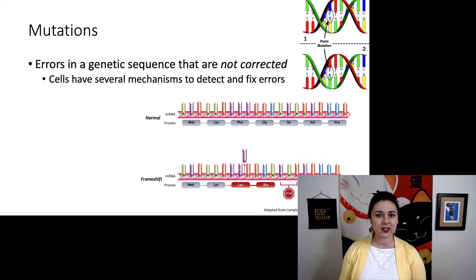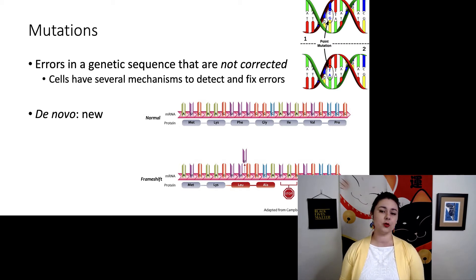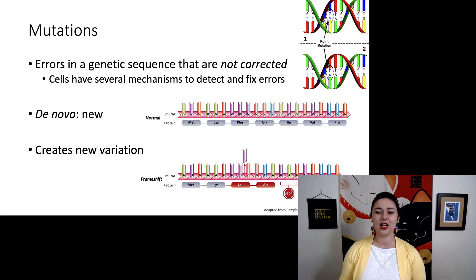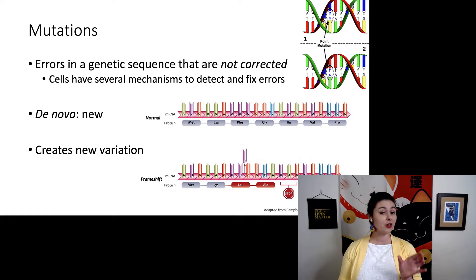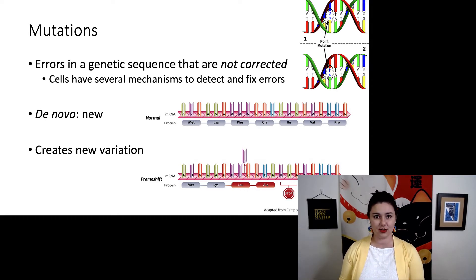There are a couple of helpful terms. De novo means new — a brand new mutation that just happened. Mutation is special among the forces of evolution because it is the only one that creates brand new variation. There are many different types of mutation. A point mutation is a single change at one base pair. A frameshift mutation is where you either add or delete, causing the reading frame of the codon to shift, producing a whole cascade of differences.